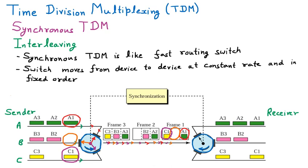Frame 1 is now complete, so the whole frame is sent. This is the complete frame 1, and it is sent to the next part, which is the receiver. At the receiver side, we already have the same type of switch. This switch also moves in the same manner and takes out all the frames. First, the turn is of A, so A1 is taken and given to the receiver.